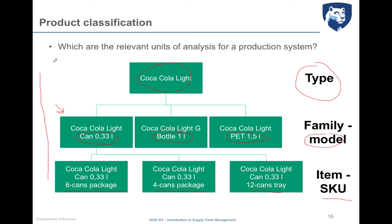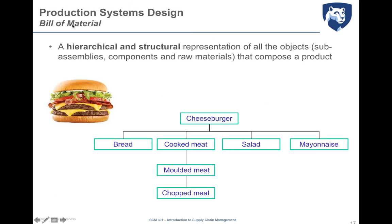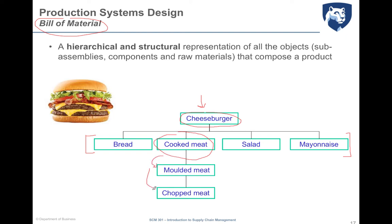There is a tool very useful for product description from the supply chain perspective: the bill of material. The bill of material is a hierarchical and structural representation of all the objects that compose a product. For example, to realize a cheeseburger, you need bread, cooked meat, salad, and mayonnaise. Cooked meat can have variants — moored meat or chopped meat. The bill of material also includes usage coefficients: to realize the cheeseburger you need two slices of bread, two hamburgers, three slices of salad, and two small spoons of mayonnaise.